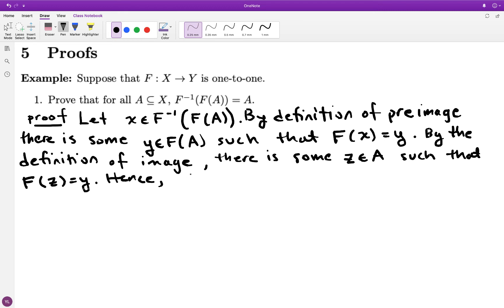But be careful, I can't reuse the letter x. It's already being used for something else, so I'm going to call that element z. So y being in f(A) means there's a z such that f(z) equals y. From this, I can conclude that f(x) equals f(z). Since f is 1 to 1, we have that x equals z. But I've stated earlier that z is in A, so that's the same thing as x as being in A.